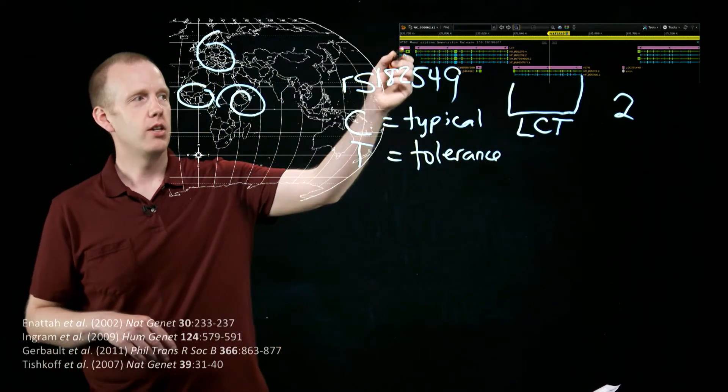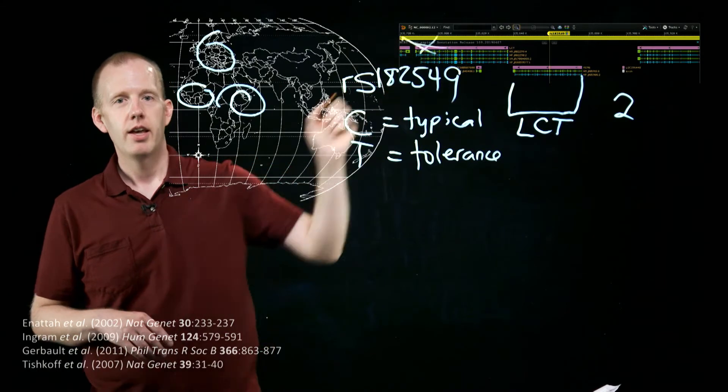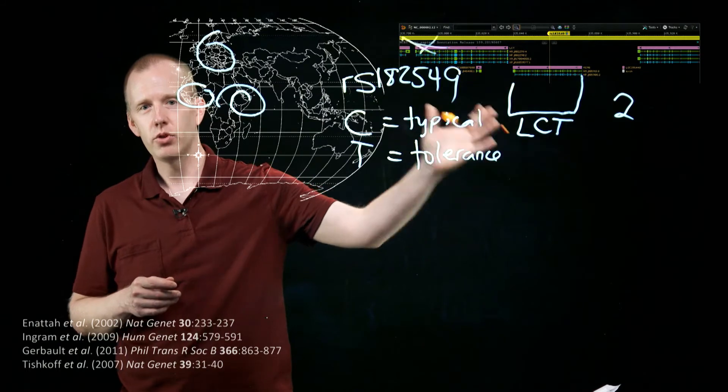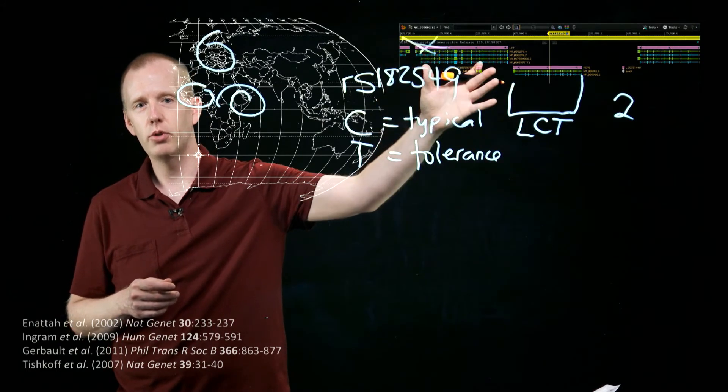And that mutation is over here in a different gene, the gene that's next to lactase. There's a second gene, here on chromosome 2, right next to it.